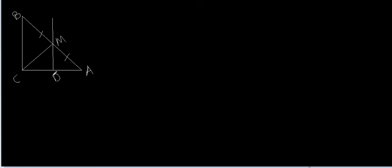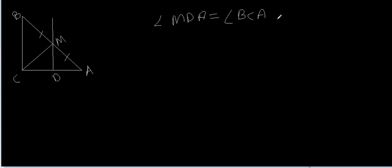Now we have to prove that MD is perpendicular to AC. Since MD is parallel to BC, with AC being the transversal, we can say that angle MDA is equal to angle BCA. And angle BCA is equal to 90 degrees. So it has been proved that MD is perpendicular to AC.